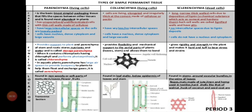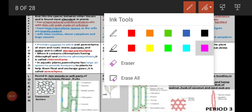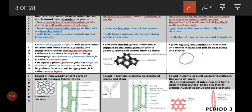Second point: parenchyma has unspecialized, undifferentiated cells with thin cell walls made up of cellulose. Since it is a living cell, the cell wall is thin, and the center has a nucleus; the cell wall is made up of cellulose. Third point: it has very large intercellular spaces as the cells are loosely packed. Parenchyma cells are not very closely attached — they are loosely arranged, and spaces will be present between the cells. The cell wall is thin, cellulose is present, it is living, so the nucleus is also present. Between parenchyma cells there will be spaces.